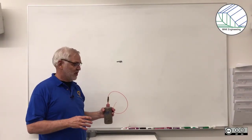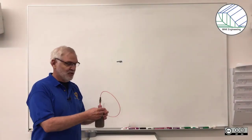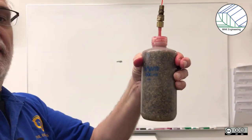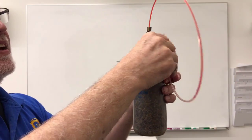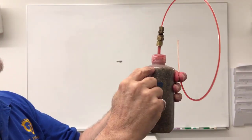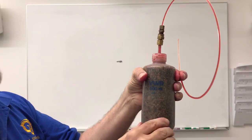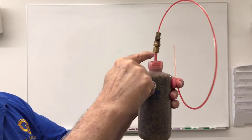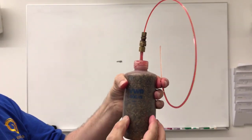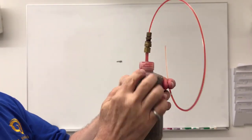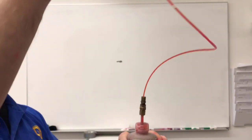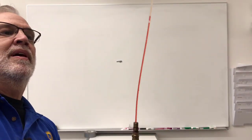Now I want to show you another crazy thing about soils. Here I have a water bottle that's completely filled up with sand — it's a fairly coarse sand — and it's completely saturated with water. I put some red dye so it's easy to see the water. You can see the water bottle is filled with sand and water, and the water comes out this tube at the top. You can see the water is coming out the tube.